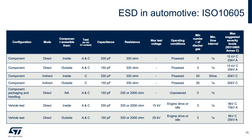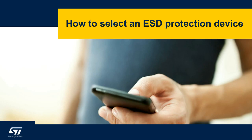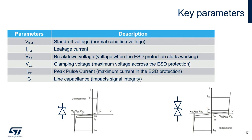Now let's review how to select the right ESD protection components for your application. We will present the key parameters of an ESD protection and how these parameters can impact your system performance. Here are the key electrical symbols and abbreviations you will use so that you can get familiar with the vocabulary. Let's review each parameter in detail.